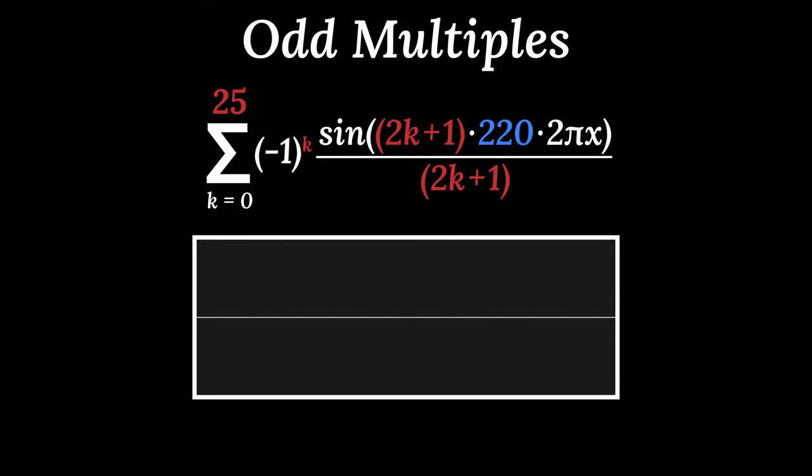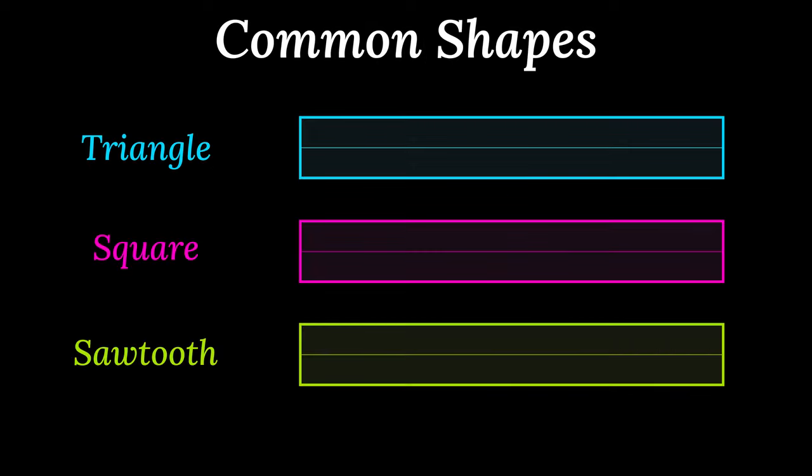If we take every other overtone and flip it upside down, we get... Huh. That's weird. Our square wave was well-contained, but this new wave doesn't fit in the box. If we square the denominator of these terms, we get a triangle wave. By stacking a bunch of sine waves, we made three wave shapes common to synthesizers of the last 60 years. Triangle, square, and sawtooth.